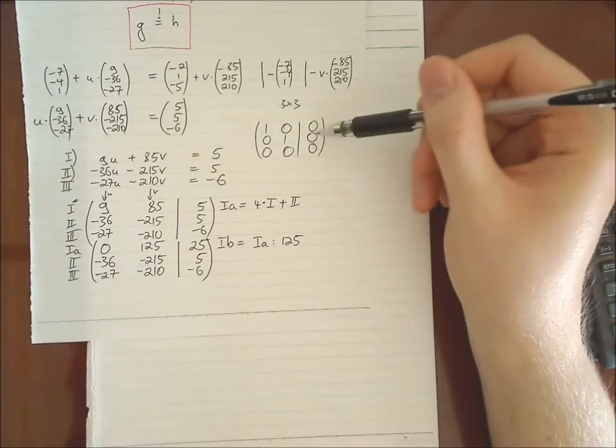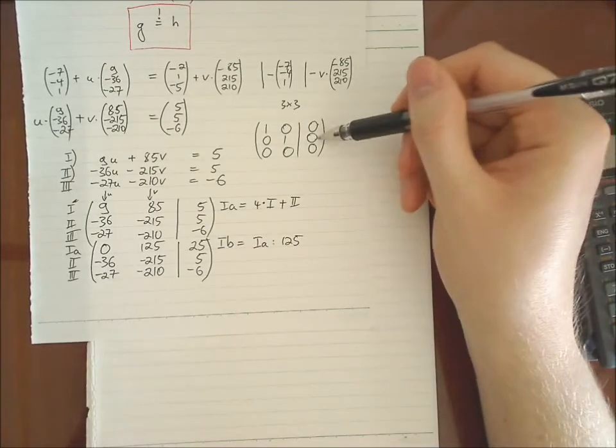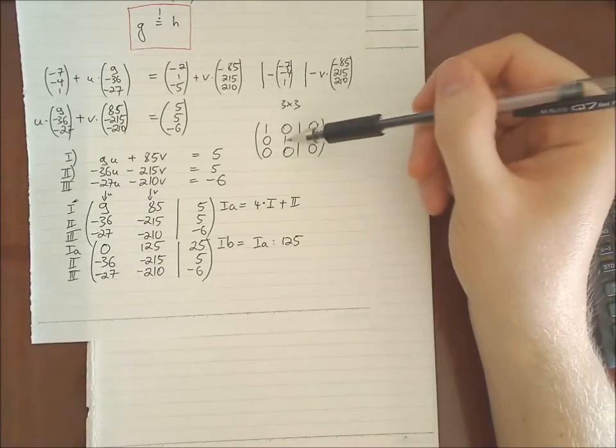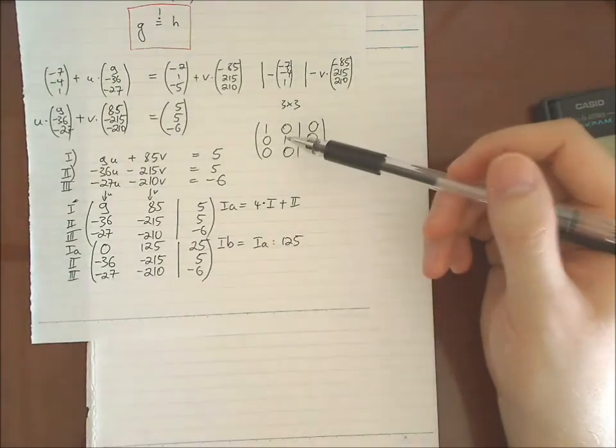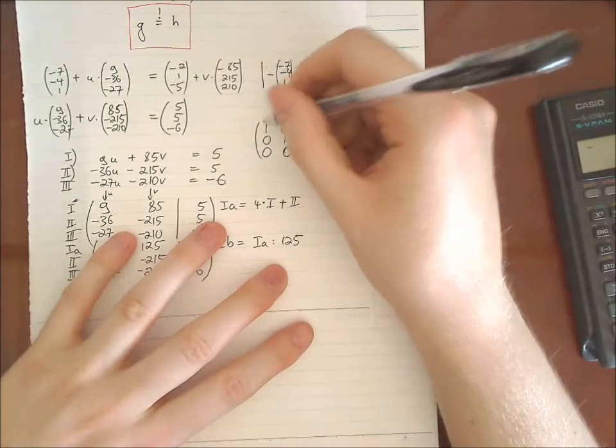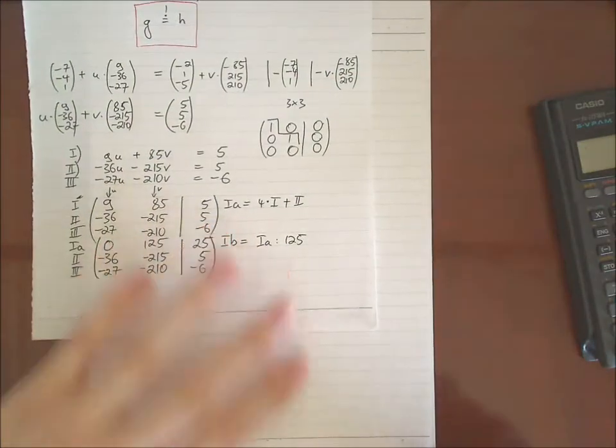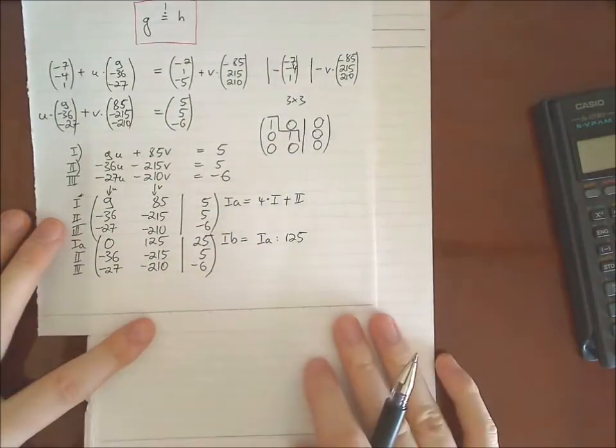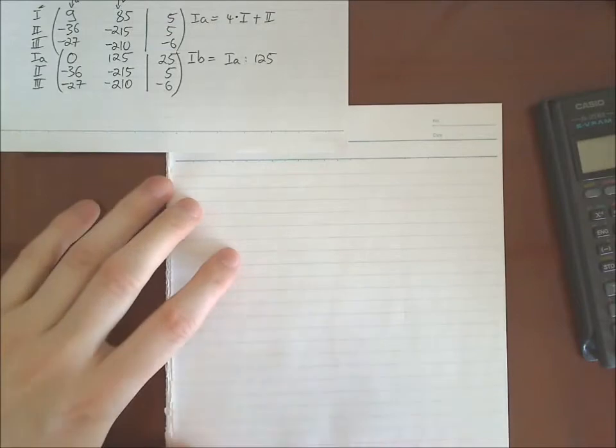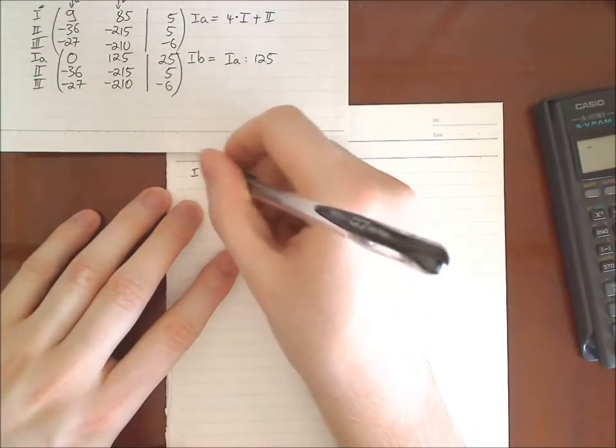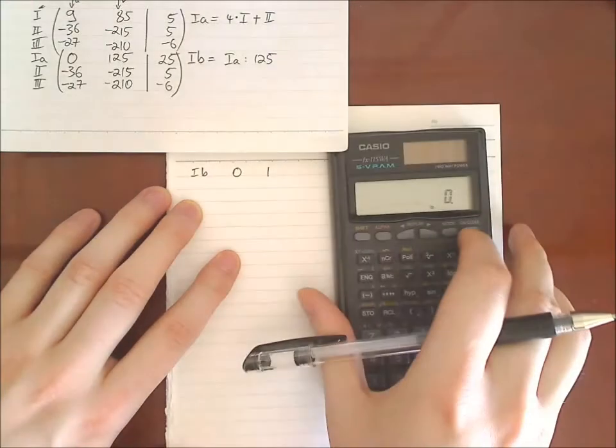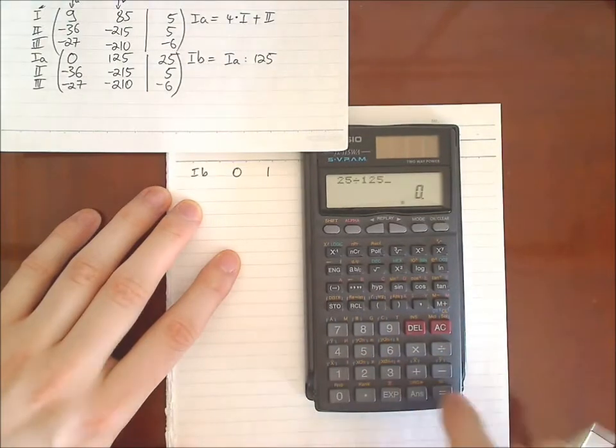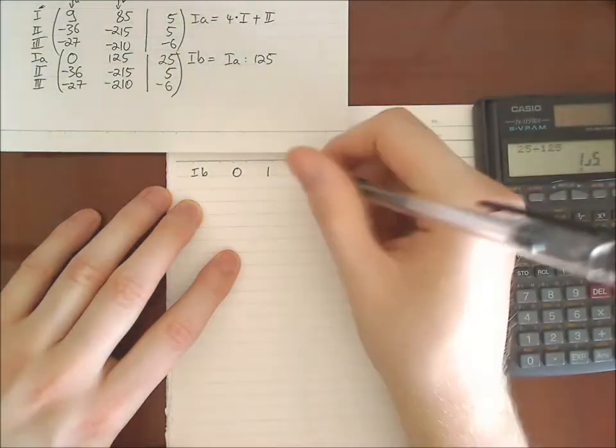But in the best case, when we receive one intersection point, then it should look something like this. Of course, there are no zeros on the right side, at least not here and here. But there should be some number here and here. And then we know the value for u and v. So we try to simplify. We try to change our matrix towards this ideal matrix with this kind of ones that form stairs.